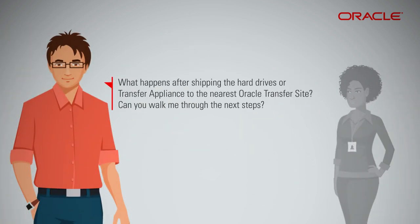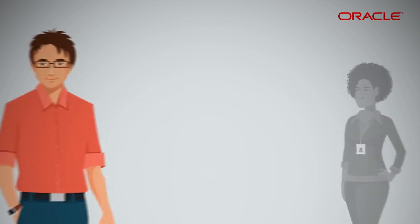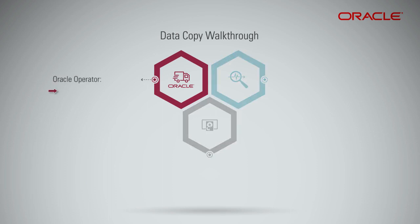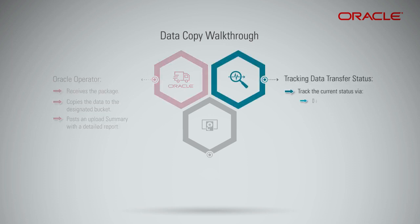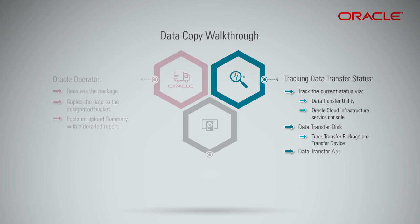What happens after shipping the hard drives or a transfer appliance to the nearest Oracle Transfer Site? Once the transfer package or transfer appliance is received, the Oracle operator copies the data to the designated object storage or archive storage buckets. An upload summary is posted to your bucket with a detailed report of the data uploaded. Tracking your data is easy using the Data Transfer Utility or the OCI Service Console. With Data Transfer Disk, you can track the current status of each transfer package and transfer device. With Data Transfer Appliance, you can track the status of each transfer job and transfer appliance.